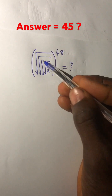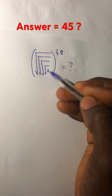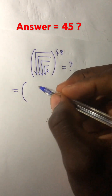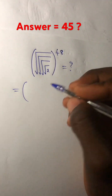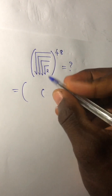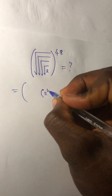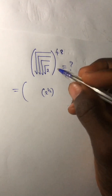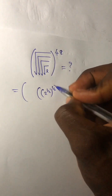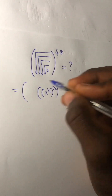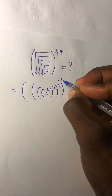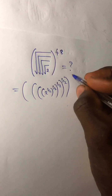Square root of square root of square root of square root of 2, raised to the power 48. First of all, we square the first one — square root of 2 is 2 raised to power 1 over 2, raised to power 1 over 2, raised to power 1 over 2, raised to power 1 over 2.